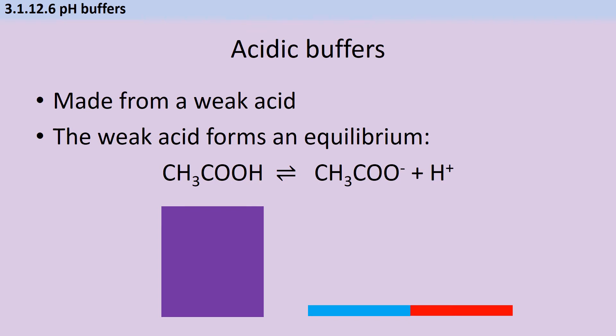Here we've got ethanoic acid, which I'm representing as this purple rectangle, splitting apart to make ethanoate ions, which I'm representing here with the blue rectangle, and hydrogen ions, which I'm representing with a red rectangle.